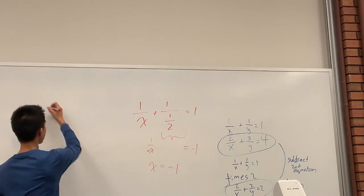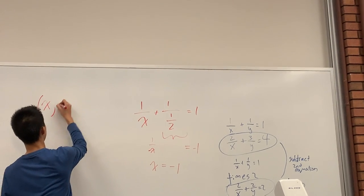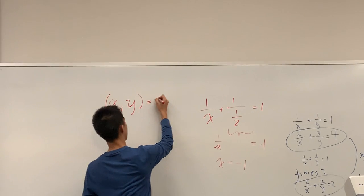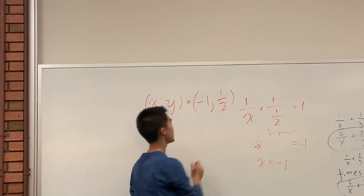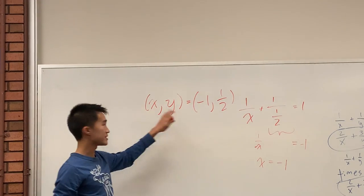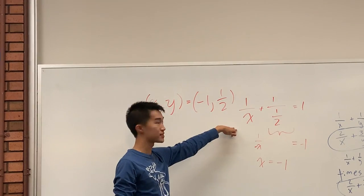Alright, so your final answer should be (x, y) equals negative 1, 1 over 2. This basically means that x equals negative 1, y equals 1 over 2.